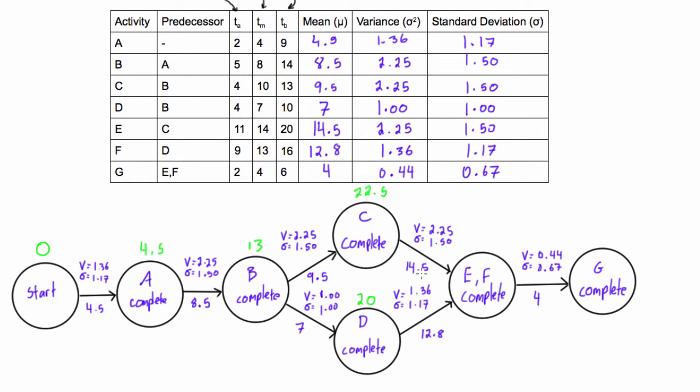And then we have 22.5 plus 14.5, that could be 37.5, or we could have 20 plus 12.8, that would be 32.8. We have to pick the larger value just like any other network diagram on the forward pass, so the number 37 here will win. And then we have 37 plus 4 and that will give us 41 for the expected project duration.